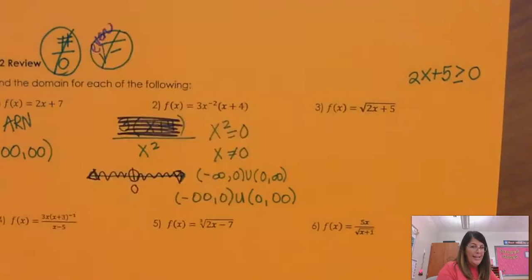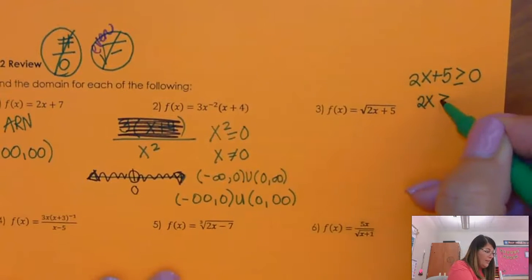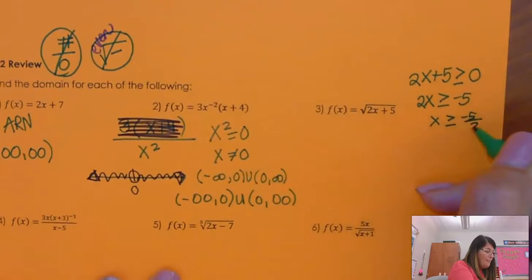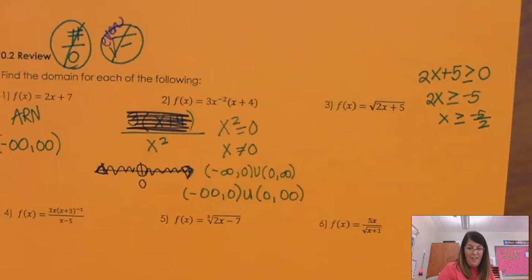So I write an inequality and then I solve this. 2x is greater than or equal to negative 5. So x had better be greater than or equal to negative 5 halves.